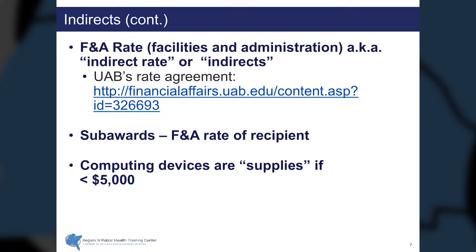Indirects are equivalent to Facilities and Administrative Costs, determined by the F&A rate negotiated by the institution with the U.S. Office of Management and Budget. As an example, you may find the University of Alabama at Birmingham's rate at the link shown. For sub-awards in a budget, the F&A rate to be applied is that of the recipient of the sub-award. In calculating indirect rates for your budget, you would take only the first $25,000 of the sub-award and include that in the total for which you are calculating indirect costs.